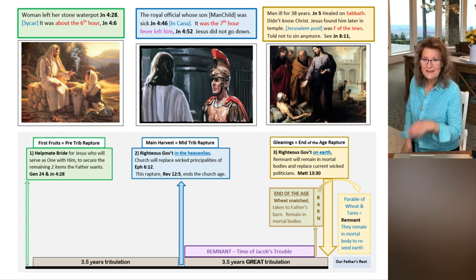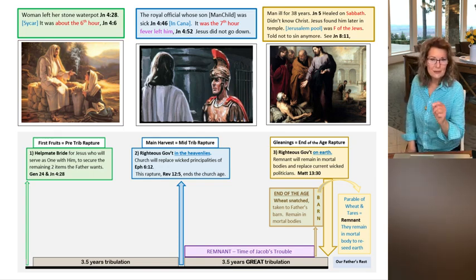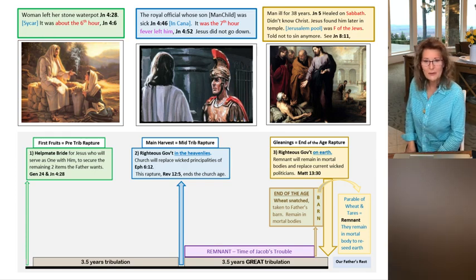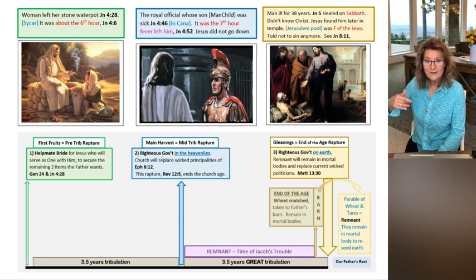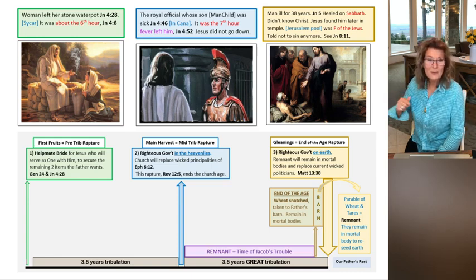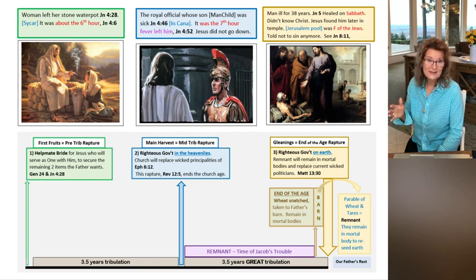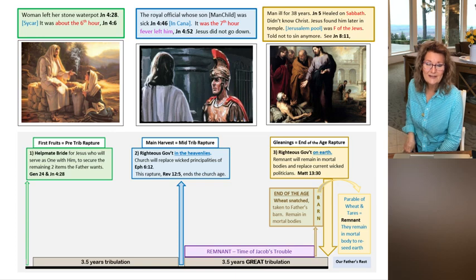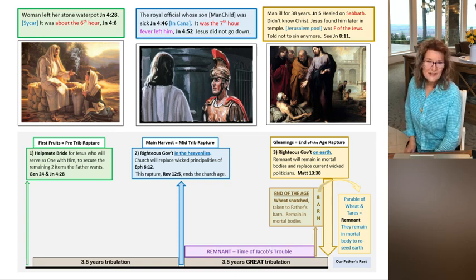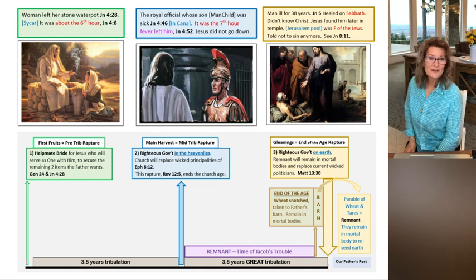This is really interesting because it gives us extra insight into the woman caught in adultery. Once all her judges who wanted to stone her walked away one by one, Jesus told the woman caught in adultery, go and sin no more. That reveals to us she is the nation of Israel.